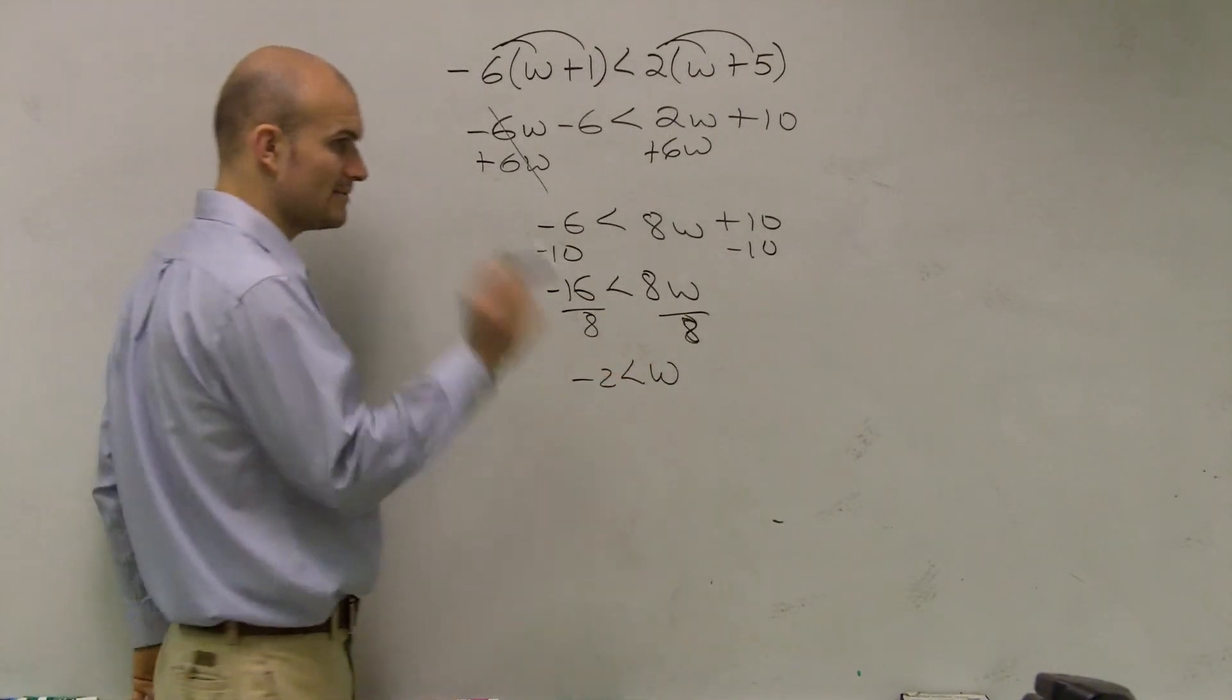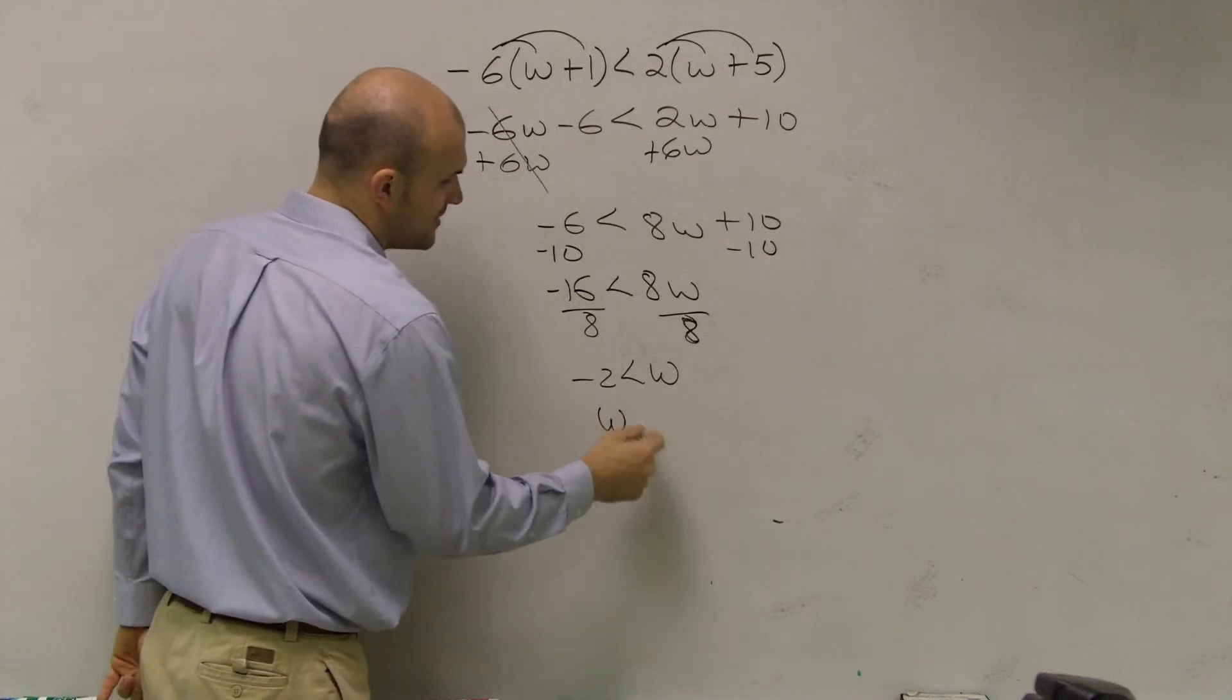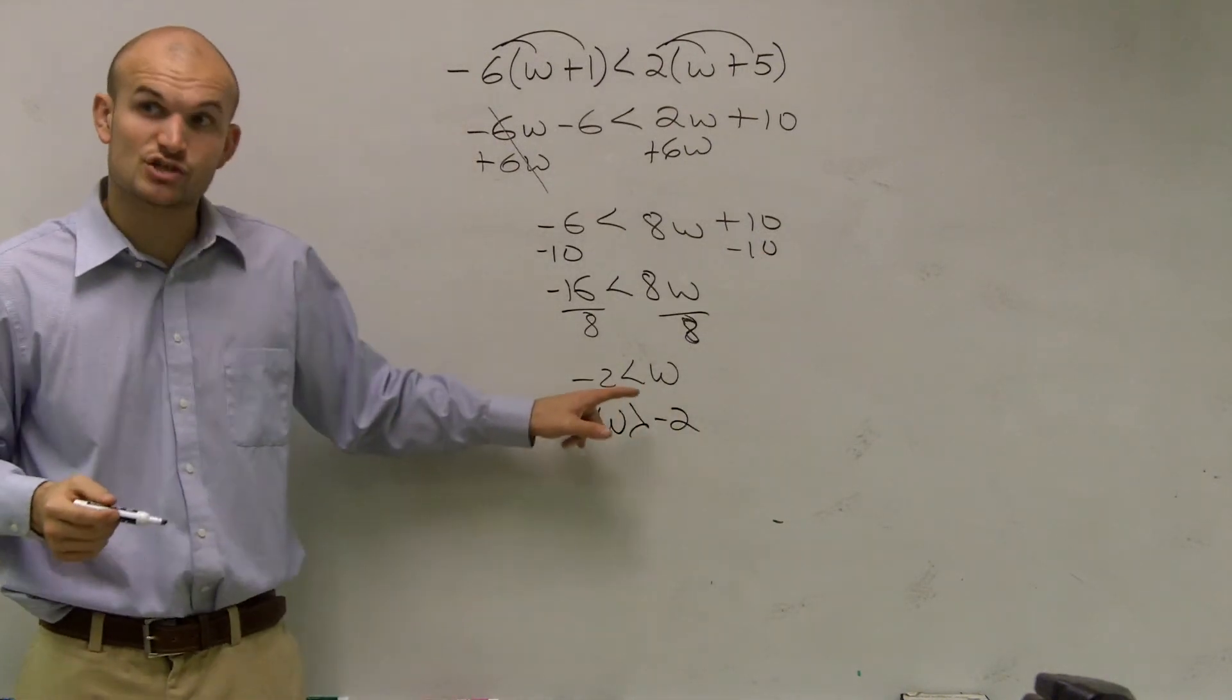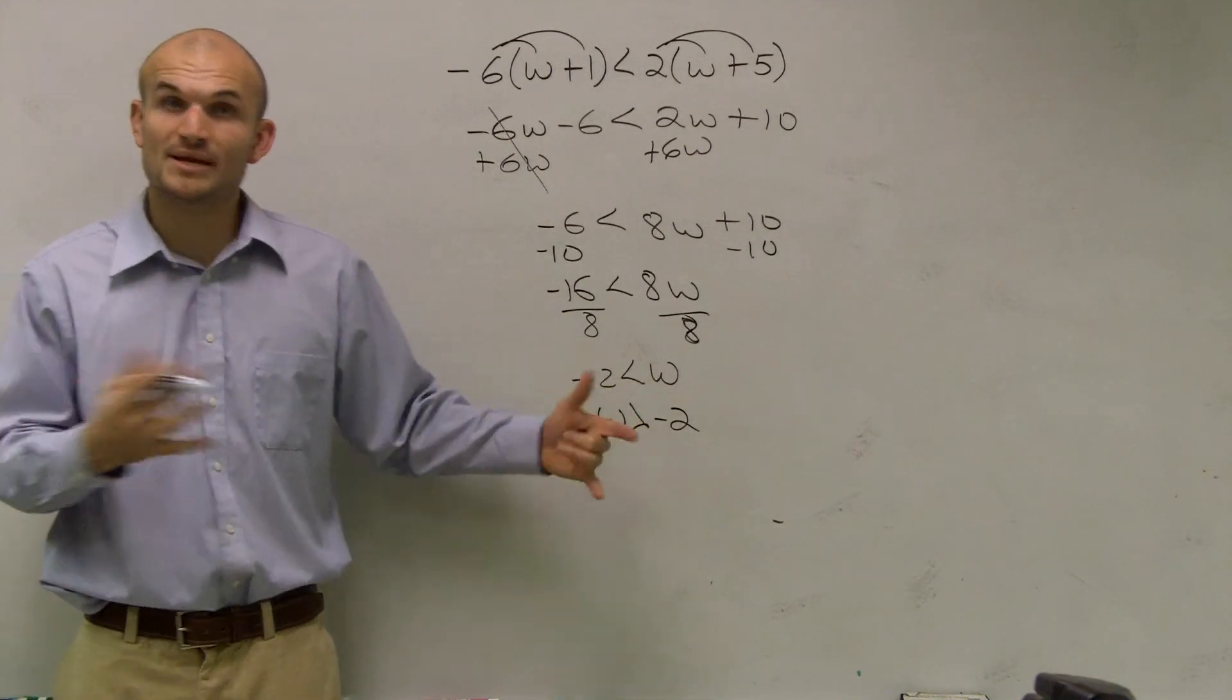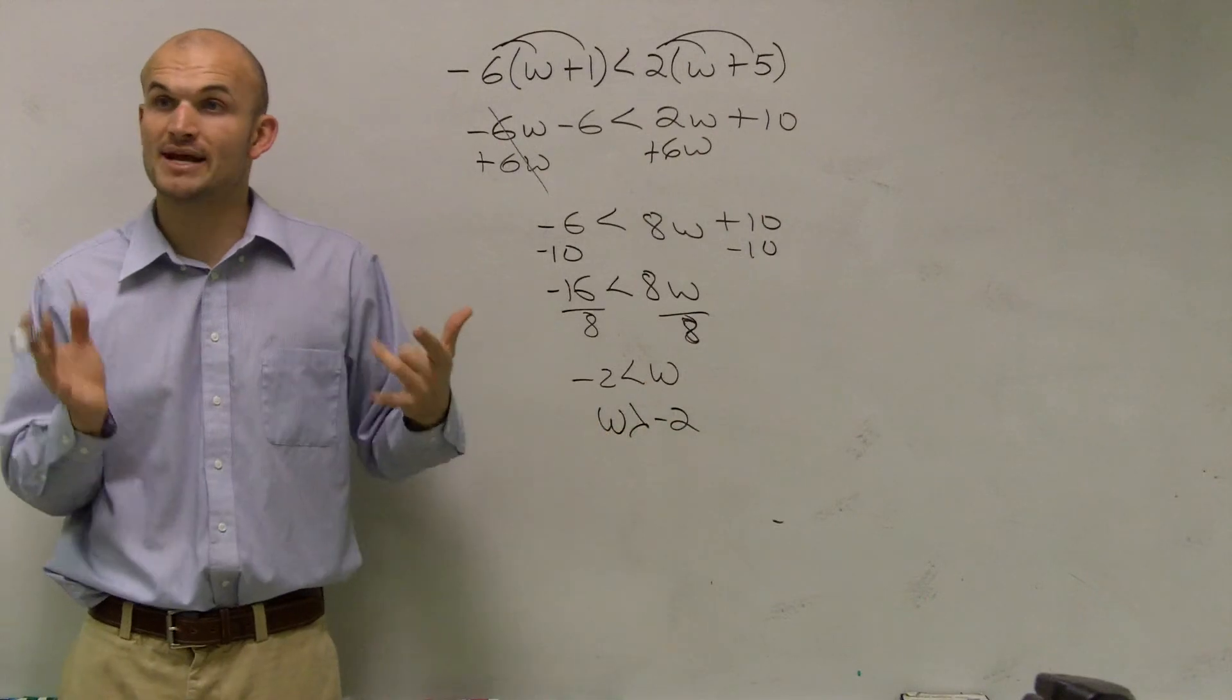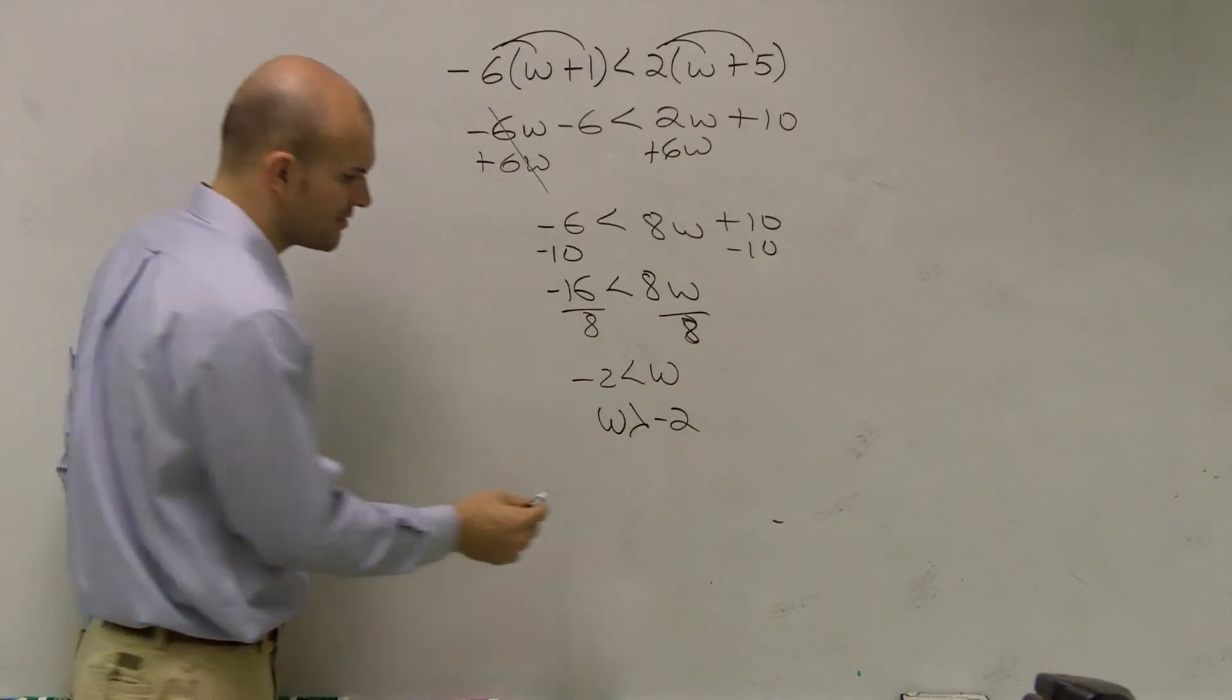I want you to make sure when you're speaking about this, you're speaking of this with your variable in front. Now, w is greater than negative 2. So what that means is all values that are greater than negative 2 are going to make our inequality true. I'm just going to show you how to graph real quick.